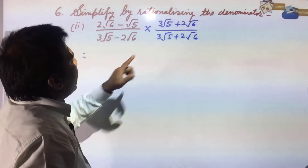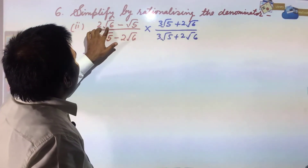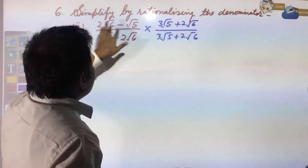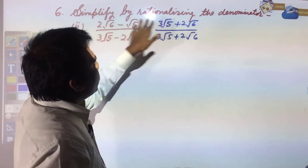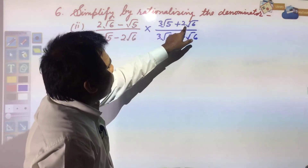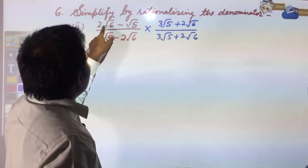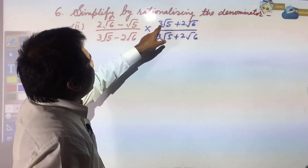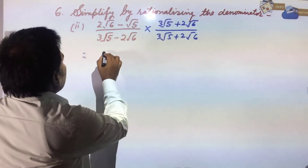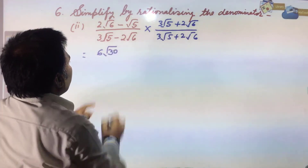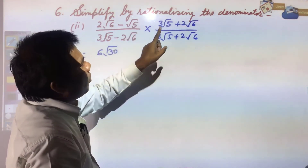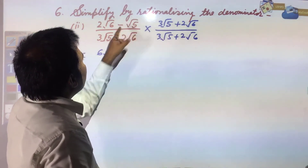We need to multiply by (3√5 + 2√6). Here no formula will be applied simply — you need to multiply the numbers. Multiply 3√5 with both terms and then 2√6 with both terms. So: 3√5 × 2√6 = 6√30, and 3√5 × √5 = 3 × 5 = 15. With the minus sign this gives -15.